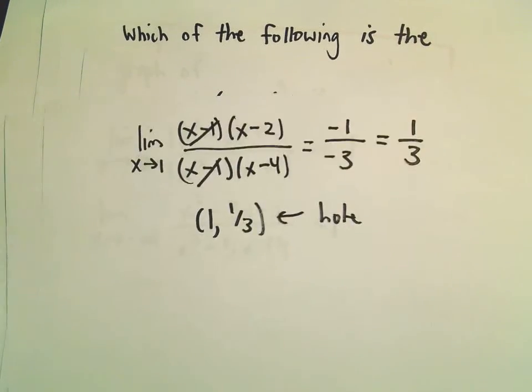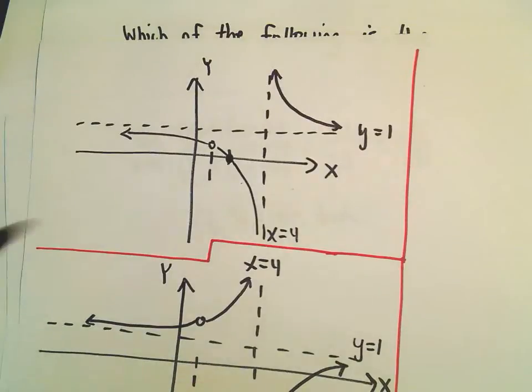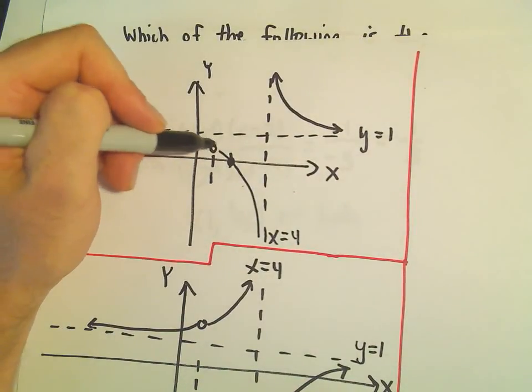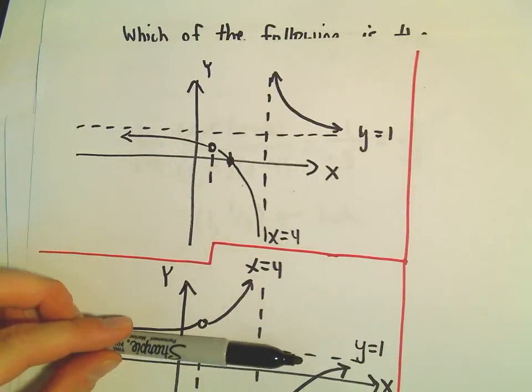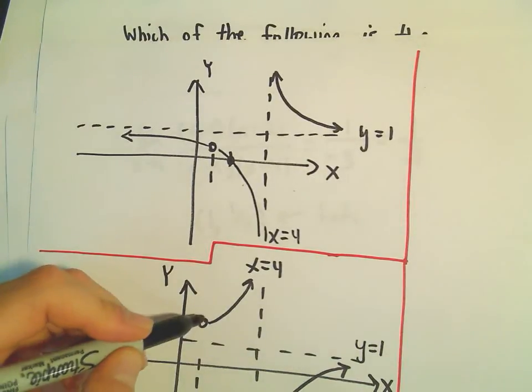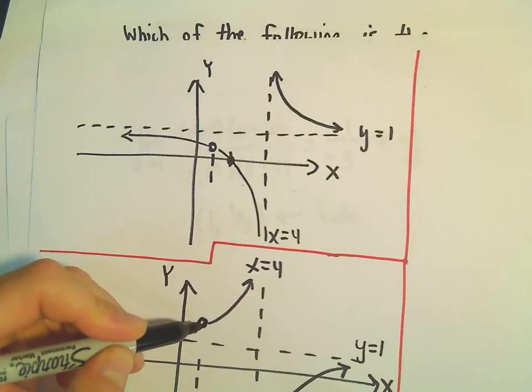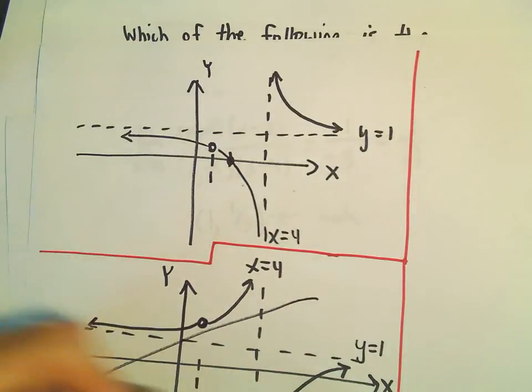And I think that's actually enough to narrow it down in this case, because this could be 1 comma 1 third, where the hole is. Since this is already the horizontal asymptote of y equals 1, here it says this hole is at a y coordinate larger than 1. So that can't be correct.